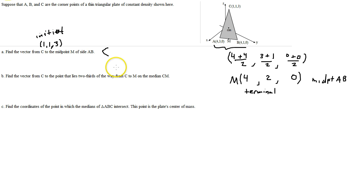And so we're going to have 4 minus 1 and 2 minus 1 and 0 minus 3. And so that vector that they're asking for in A is 3, 1, negative 3.